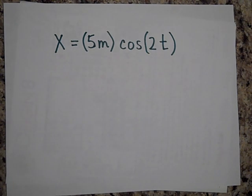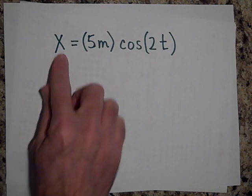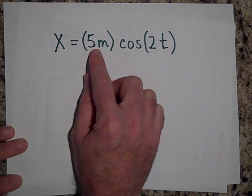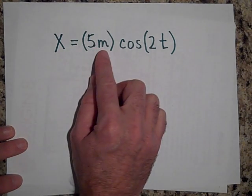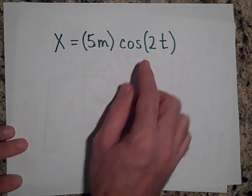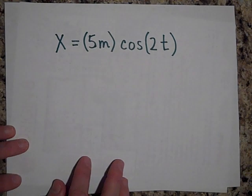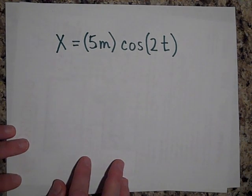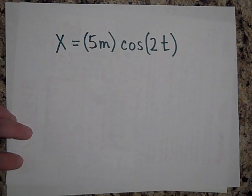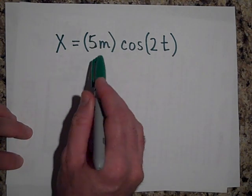The position from equilibrium is x = 5 meters times cosine of 2t. First question: can you tell me what the amplitude of this motion will be? The amplitude will be 5 meters.